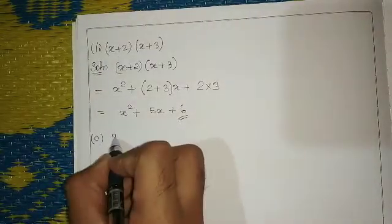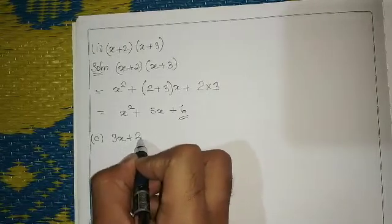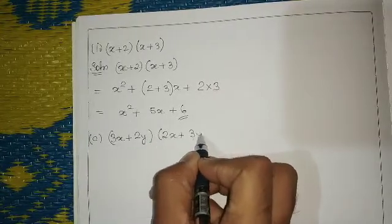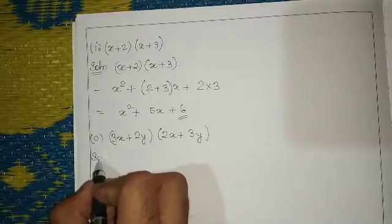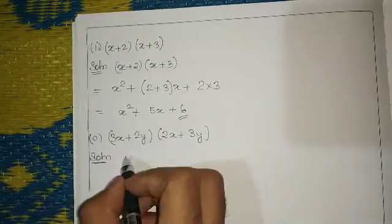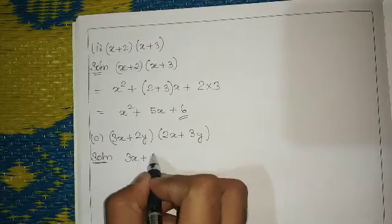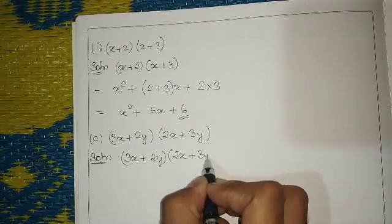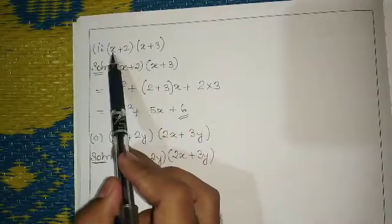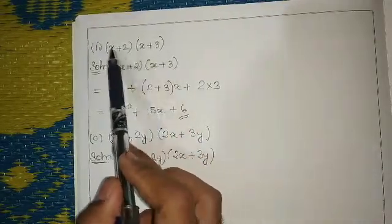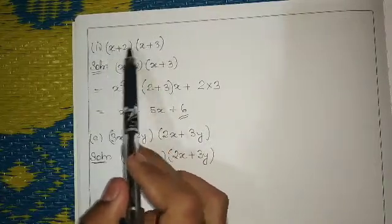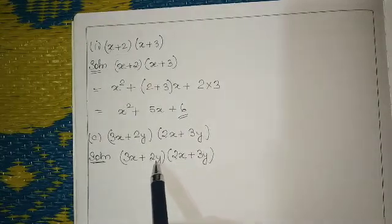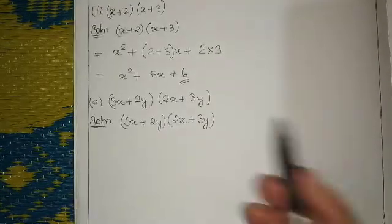Now for question number c: it is given thrice x plus twice y times twice x plus thrice y. Here you cannot use the same formula as above, because the terms in the expressions are not the same. In the first case both first terms were x, but here the first term is thrice x and twice x, and the second terms are twice y and thrice y — they are different.